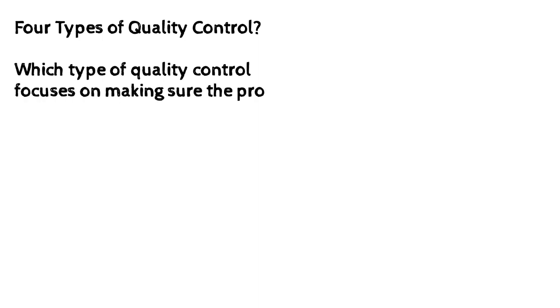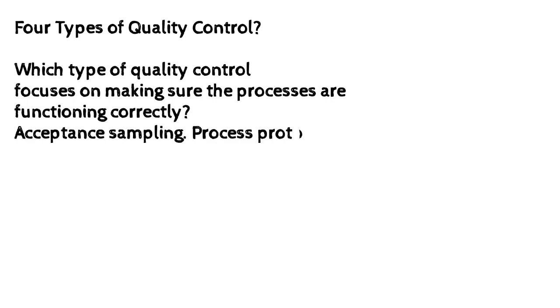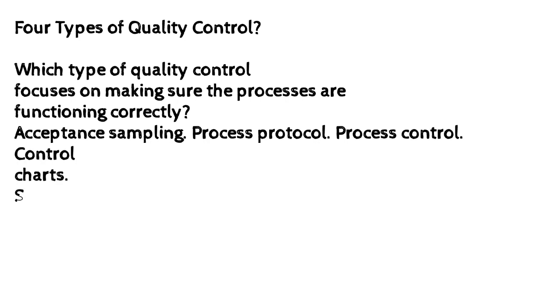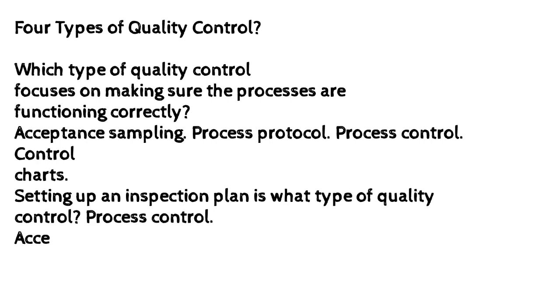Four types of quality control: Which type of quality control focuses on making sure the processes are functioning correctly? The four types are: acceptance sampling, process protocol, process control, and control charts. Setting up an inspection plan is what type of quality control? Process control, acceptance sampling, control charts, inspection.